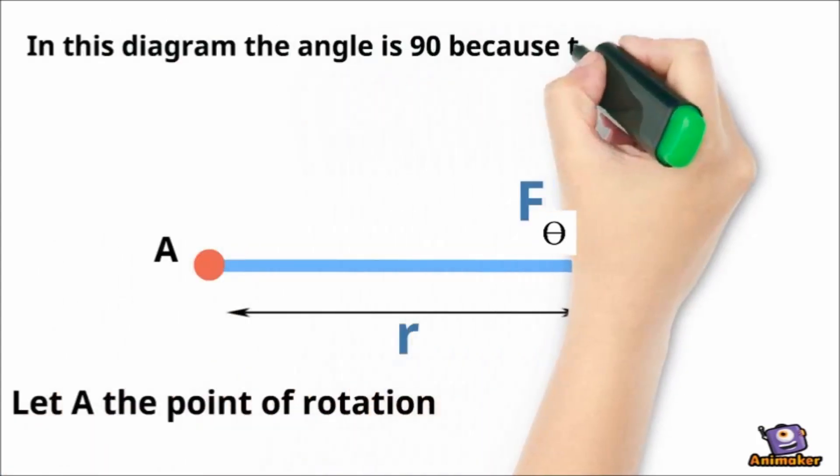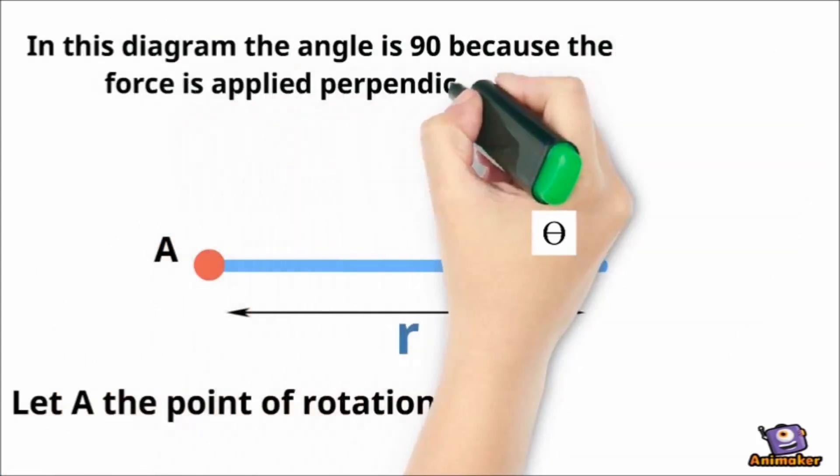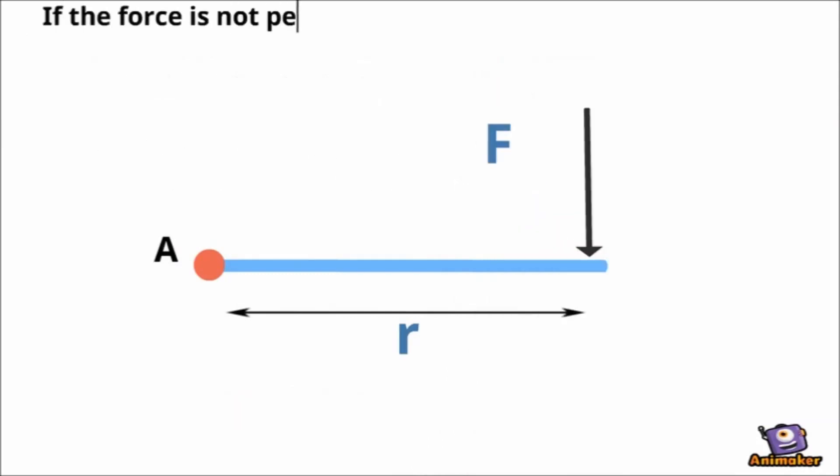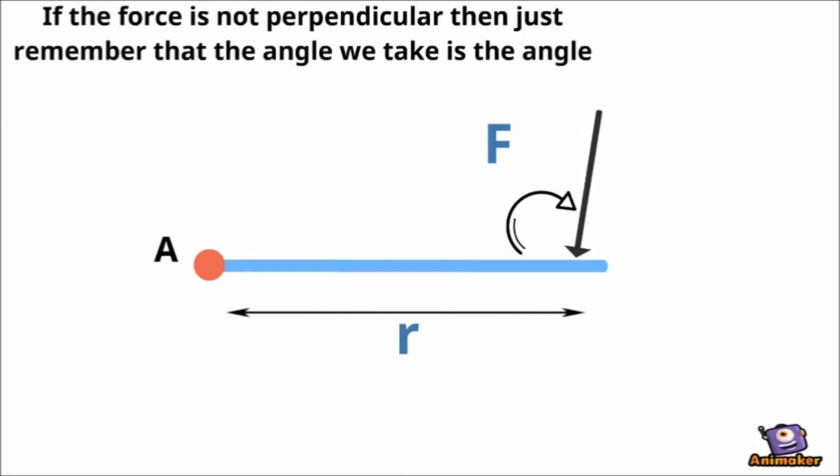In this diagram, the angle is 90 because the force is applied perpendicularly. Note that force is not always applied perpendicularly. If the force is not perpendicular then just remember that the angle we take is the angle between the lever and direction of force.